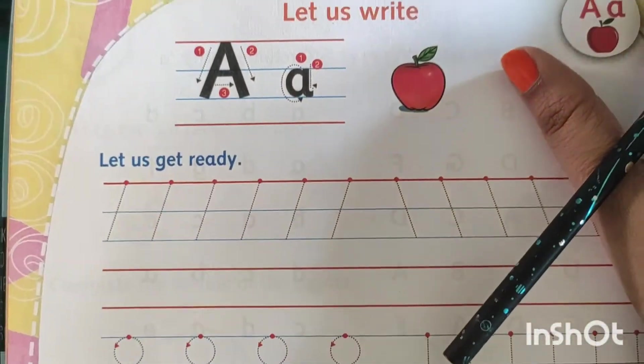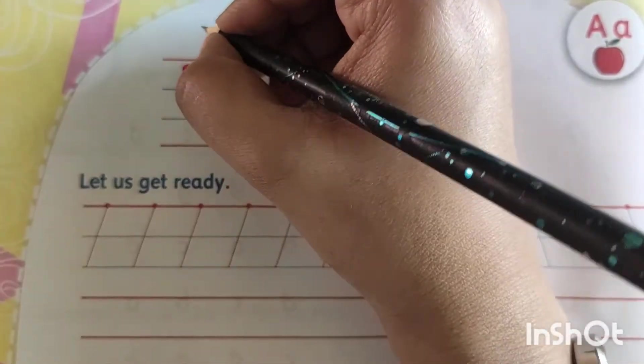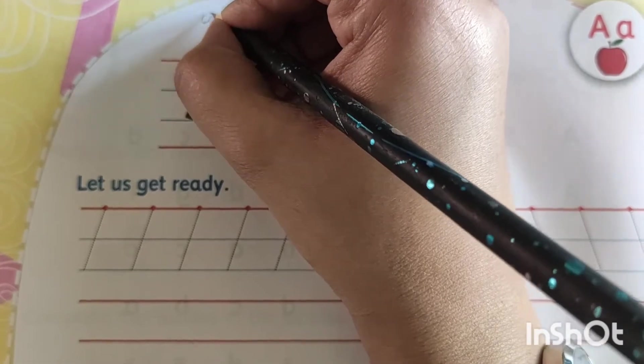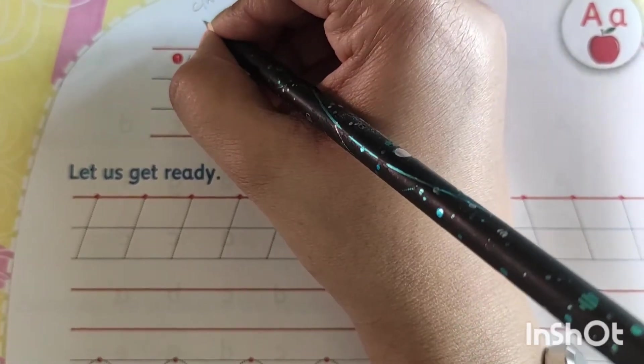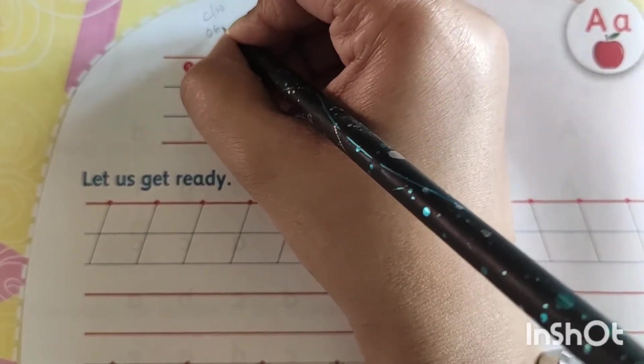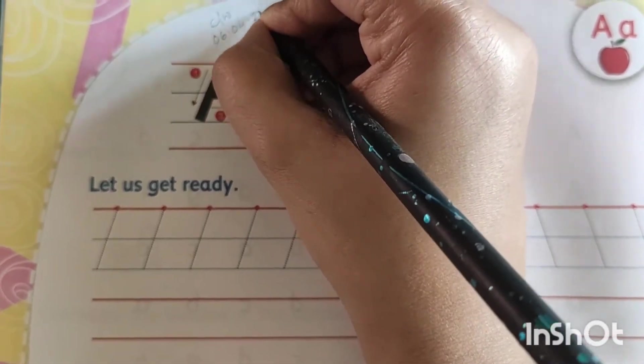So let us start to write. And you know before going to start our class work, we have to put C-W and today's date. That is 06-04-2021.